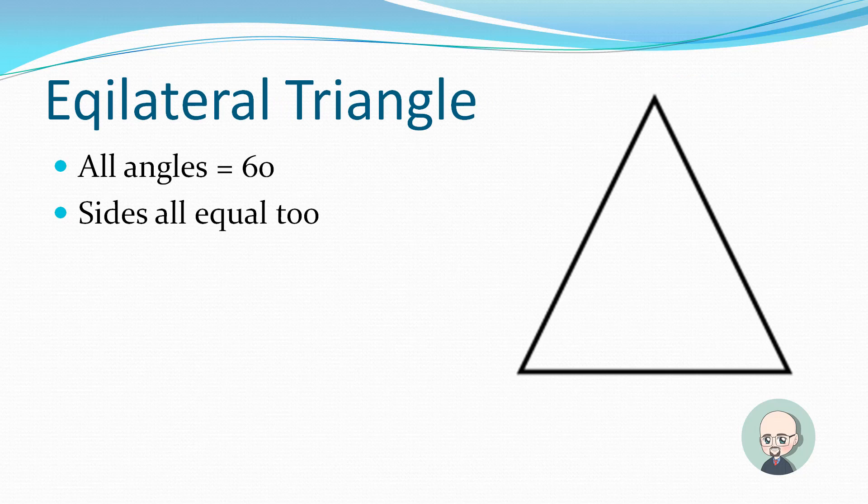Now let's look at an equilateral triangle. In an equilateral triangle, all angles are equal to 60. And because of this, all sides are also equal. It'll look something like that.